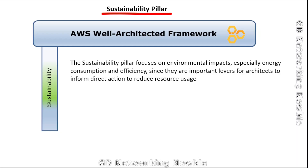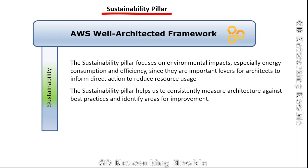Energy consumption and efficiency are important levers for architects to inform direct action to reduce resource usage. By reducing resource usage, we can indirectly reduce environmental impact. The sustainability pillar helps us consistently measure architecture against best practices and identify areas for improvement — to minimize impact, mitigate climate crisis, and make use of green energy.